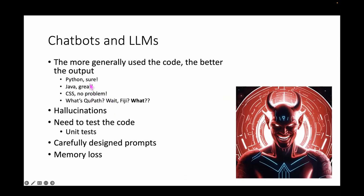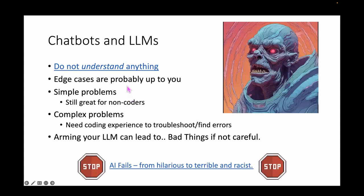The bad side: ChatGPT has pretty good understanding of Python, Java, and CSS, but QPath and Fiji are tiny corners of the internet — it doesn't have much training data on those. Even if it read the whole Java docs, that's a small proportion of what people post online. It is going to hallucinate extensively. Any code it generates — always test it, do unit tests. You have to be very careful about your prompt design, and with extremely long code it tends to run into memory loss problems.